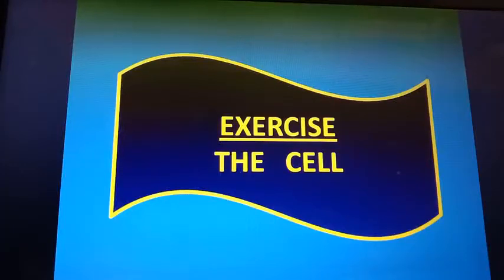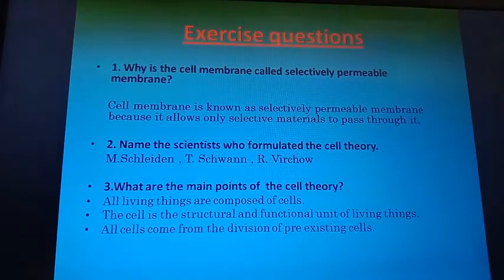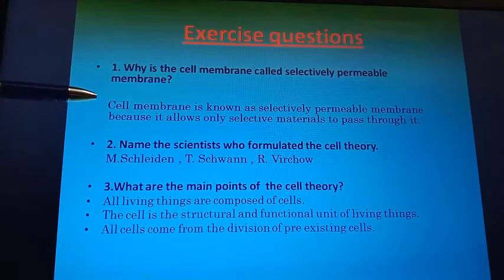Hello students. In our last session we discussed the exercise questions of the chapter 'The Leaf.' In today's session we are going to discuss some important questions of the chapter 'The Cell.' The first question is: why is the cell membrane called a selectively permeable membrane? The cell membrane is known as a selectively permeable membrane because it allows only selective materials to pass through it.